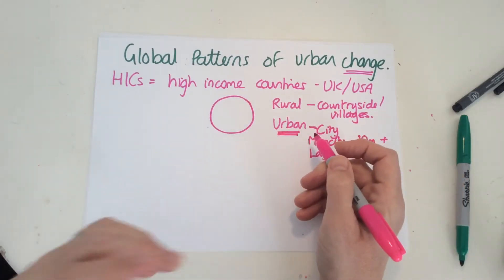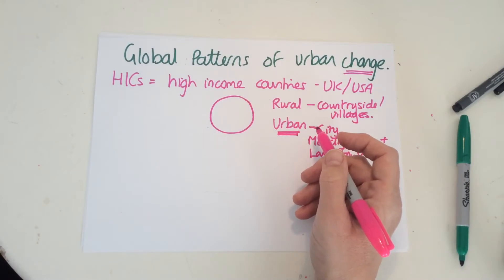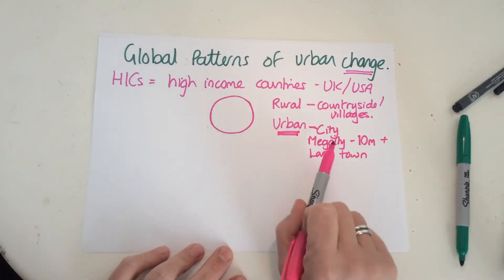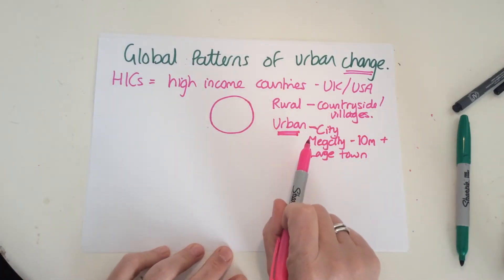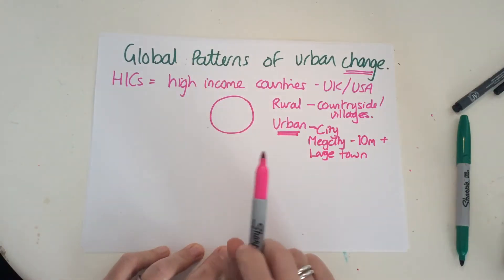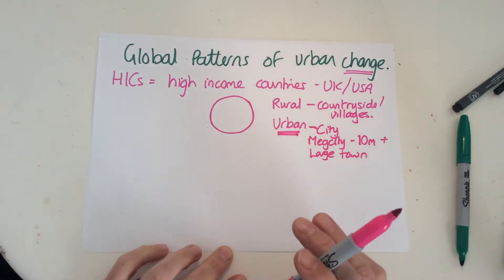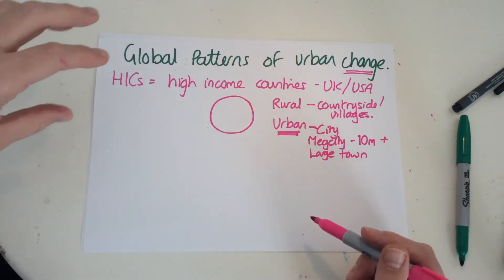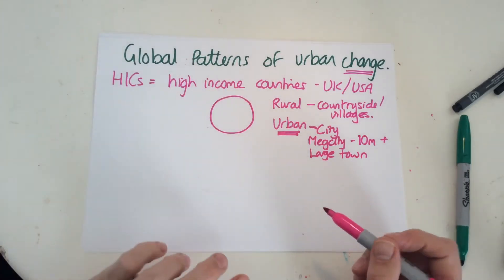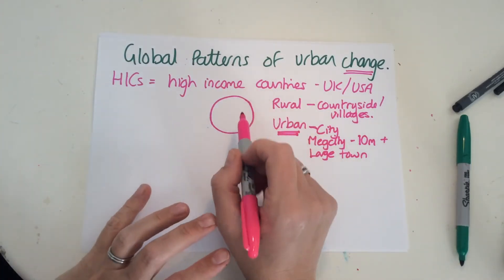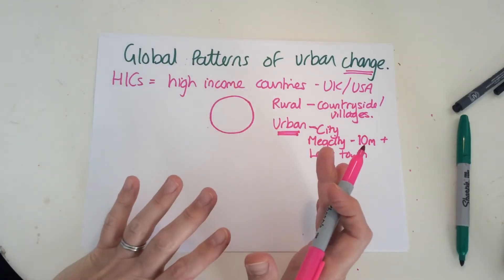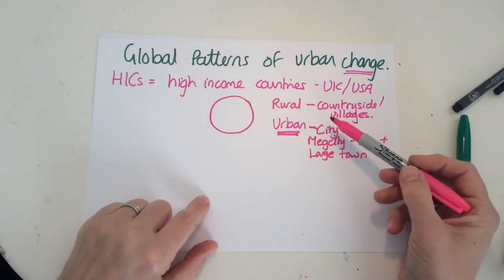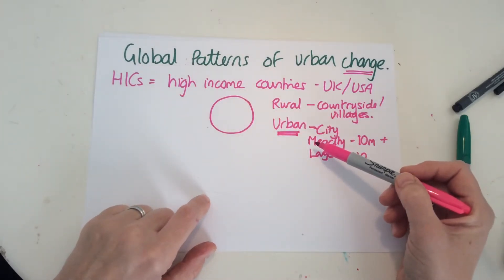A mega city has 10 million plus people. It could also be a large town. Urban — if you think about urban music, urban fashion — those things tend to be associated with cities. A rural area is the countryside. In the whole world, we have a percentage of people living in rural areas and in urban areas.